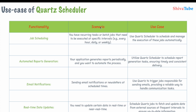One functionality you'll encounter when working in a company is job scheduling. If you have recurring tasks or batch jobs that need to be executed at specific intervals — for example, logic that needs to run every hour, daily, or weekly — you can use Quartz Scheduler's job scheduling to achieve this.